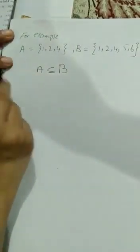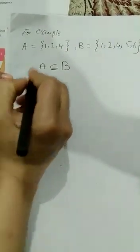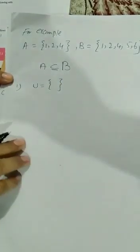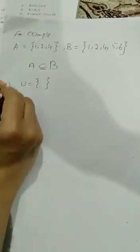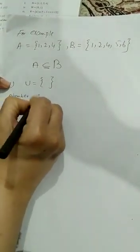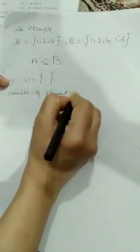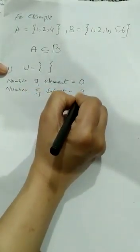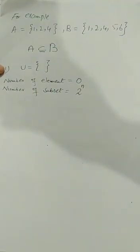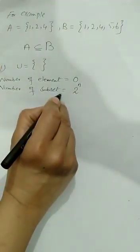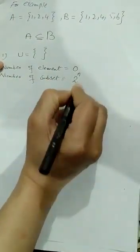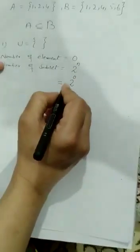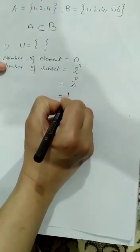Now, dear students, that is the definition of subset. How will we do these questions? For finding subsets, we have a formula: Number of subsets is equal to 2 power N, where N is the number of elements.